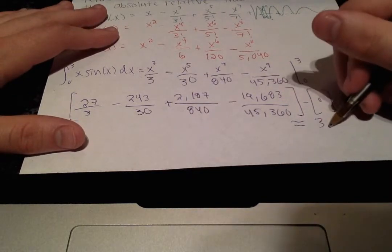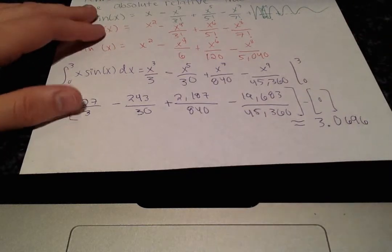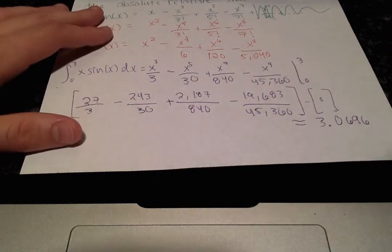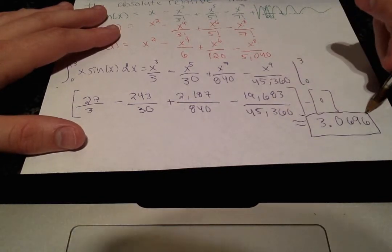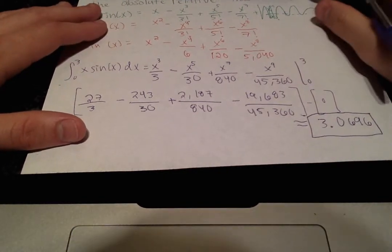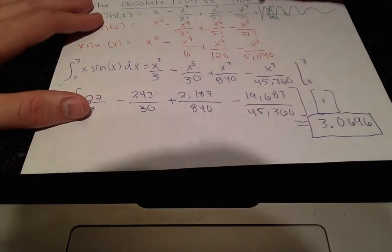And this is our approximation with the first four non-zero terms of the Taylor series. And let's not forget that we also want to calculate the absolute relative true error,